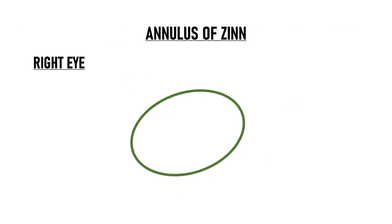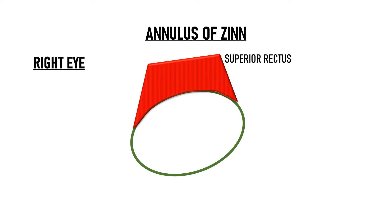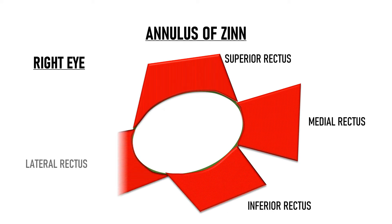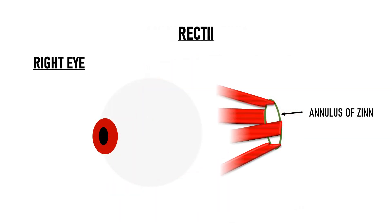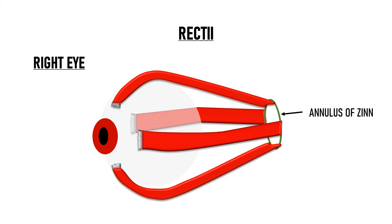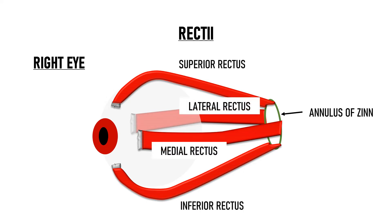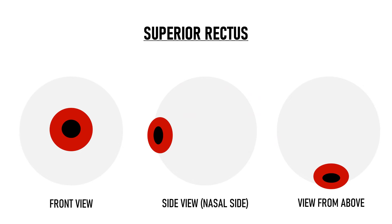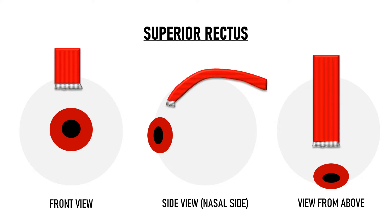The 4 recti arise from the annulus of Zinn. As their names imply, superior rectus arises from the superior part of the ring, medial rectus from the medial part, inferior rectus from the inferior part, and lateral rectus from the lateral part. All 4 recti then travel anteriorly and get inserted on the sclera. Superior rectus gets inserted on the superior sclera, which you can see from front, medial, and superior perspectives.